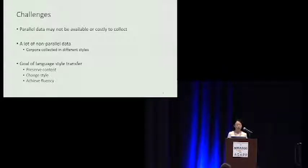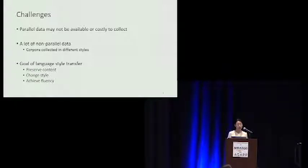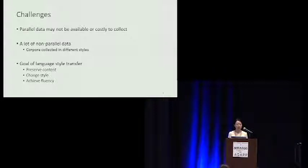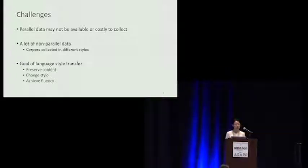We do have access to a bunch of non-parallel data from different styles. So the question becomes: how can we learn style transfer using non-parallel data? Parallel data can provide a strong supervision signal for model training, but non-parallel data only provides a vague supervision signal when we train the model for style transfer. We want to make sure we can preserve the content from the source sentence, and we expect the generated sentence to be in the target style, and also as fluent as possible.